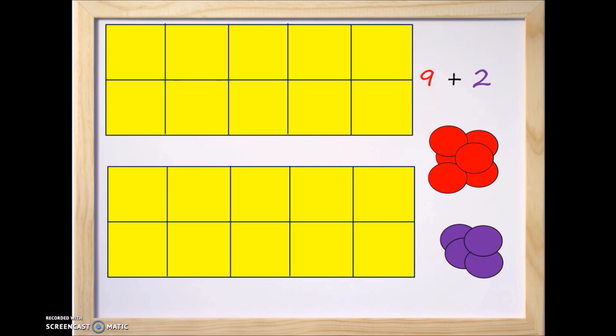And remember, what we're trying to do is we're trying to learn how to make 10 to make it easier to do the problems. So we're starting with 9 plus 2, and we want to find out what does 9 plus 2 equal. So let's move the counters on to the 10 frames. So we'll start with the red counters, and let's start adding them.